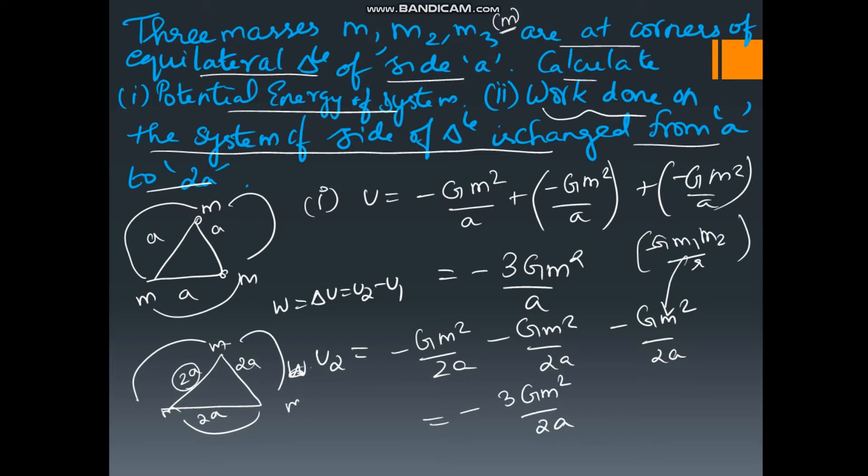Now, they are asking work done. Work done is U2 minus U1. So U2 is minus 3 G M squared by 2A minus initially it is minus G M squared by A. So it is becoming plus. A into 2 into 2 I am multiplying. So I get minus G M squared by 2A. This is the work done.